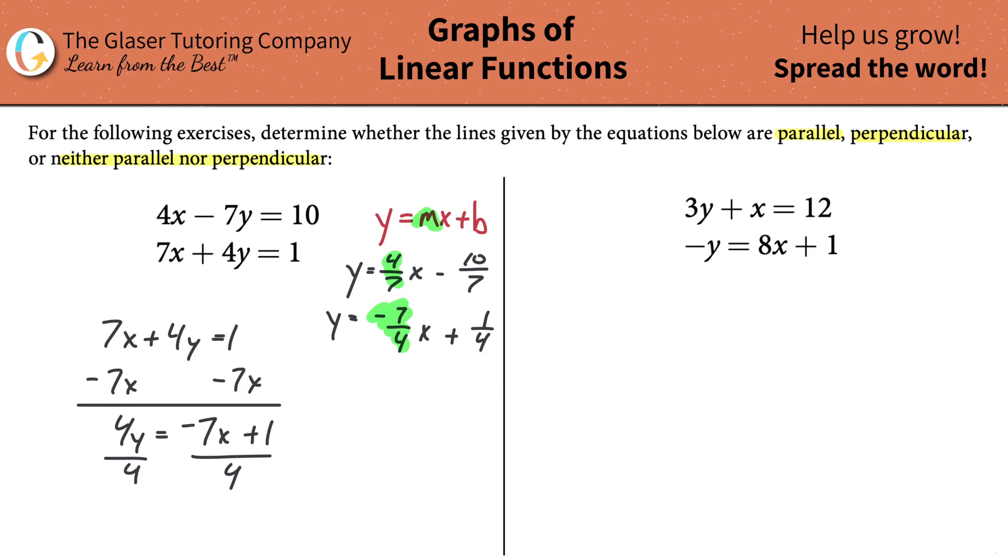So now what you got to do is you got to look at the relationship. Look at the relationship between these two slopes: 4 over 7 and negative 7 over 4. What's the relationship? They're opposite reciprocals, right? So what do we have then? We have a perpendicular line.